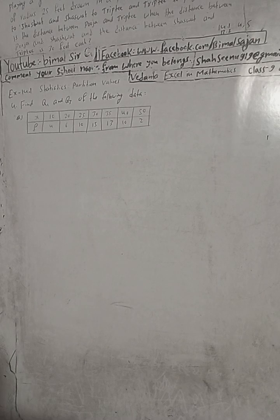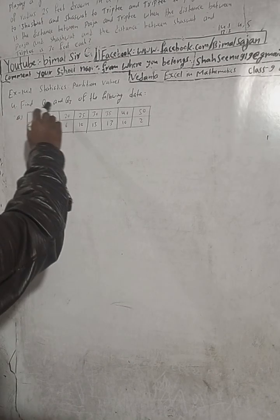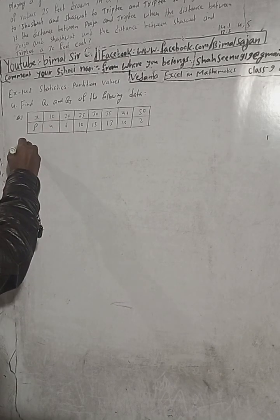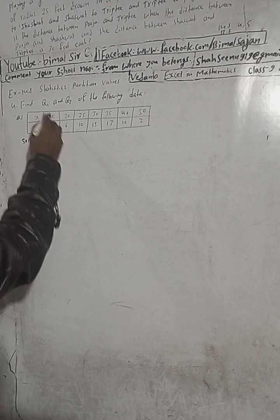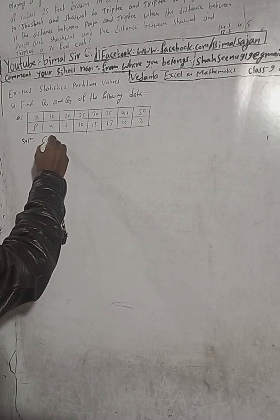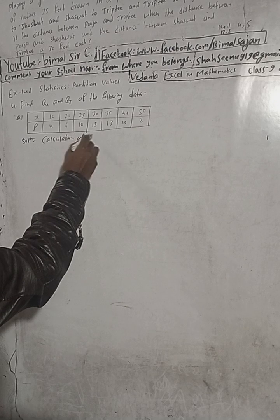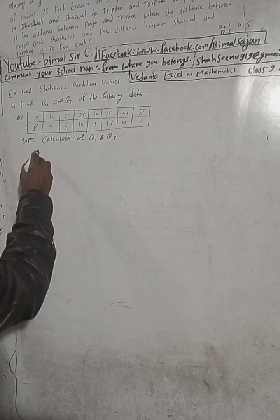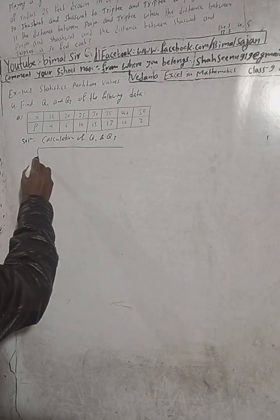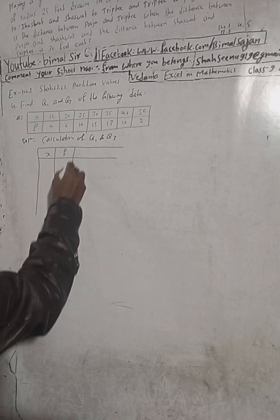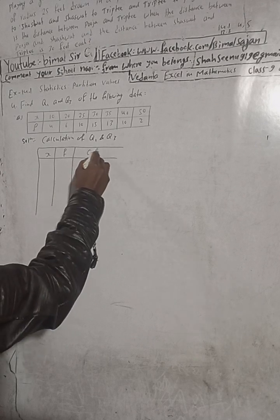Let's begin the solution now. Find Q1 and Q3 of the following data. So this is the data — x and frequency. For the solution, to calculate Q1 and Q3, we have to make a table here with columns for x, frequency, and cumulative frequency (CF).